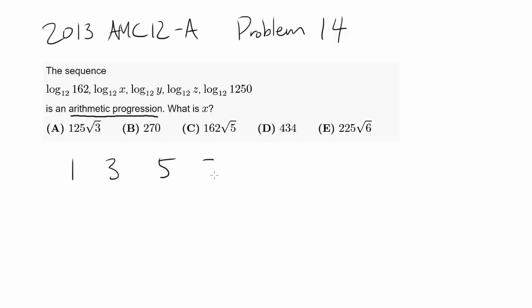So 1, 3, 5, 7, 9 is an arithmetic progression because you're adding 2 each time.